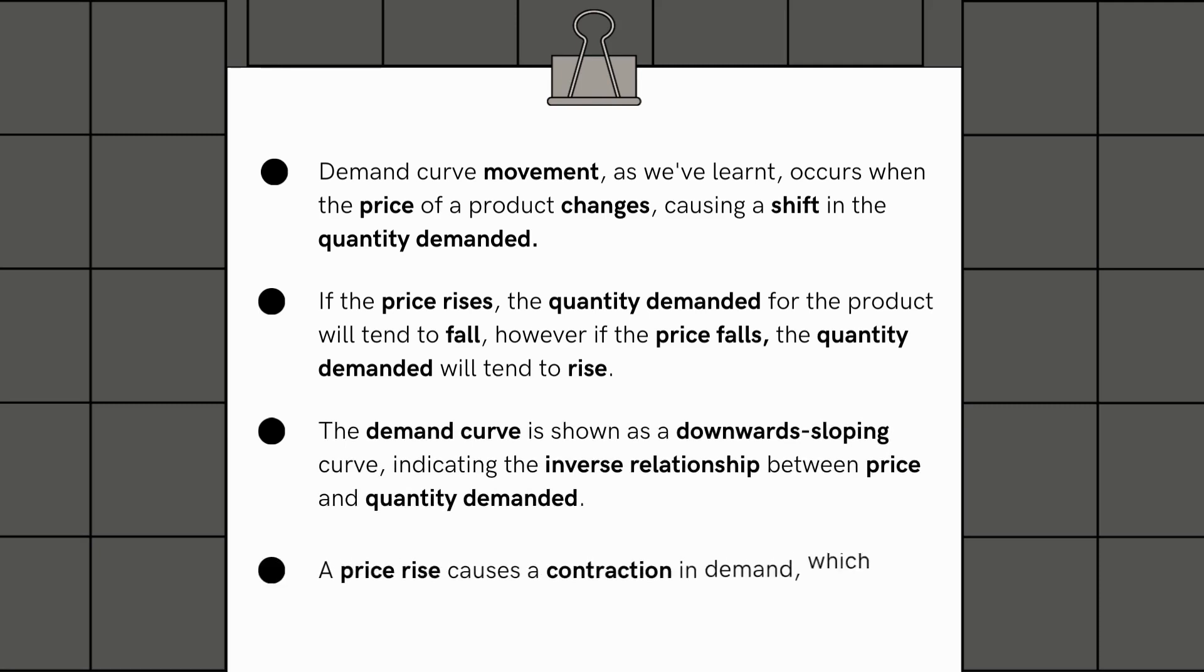A price rise causes a contraction in demand, which means that the quantity demanded falls, and a price fall will cause an extension in the quantity demanded.